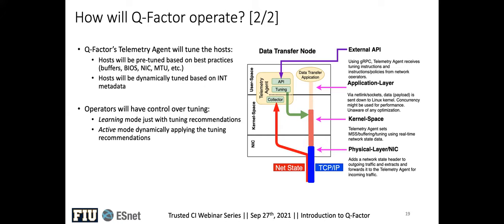Regarding the concern about exposing external APIs to an agent crossing kernel space: operators will have control of the tuning. The telemetry agent is an active component that runs and monitors performance and state of the environment. We understand some operators may be concerned about a component making changes autonomously. So we have a learning mode that logs recommendations to syslog, leaving it up to the operator to apply changes or not. We also have an active mode that applies tuning automatically once you trust Q-Factor.